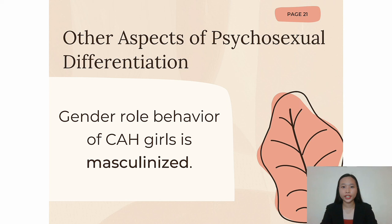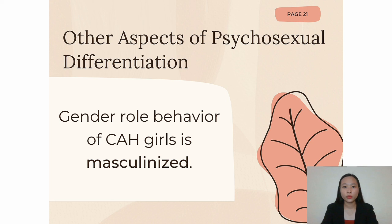As mentioned in the article, there is now considerable evidence that gender role behavior of CAH girls is masculinized in the sense that, on average, these girls show a shift in the direction of male-typical interest and activity preferences. For example, in sex-typed play behavior, compared to unaffected sisters and female cousins, CAH girls play more with toys that are typically made for males, and conversely play less with toys that are typically for females.